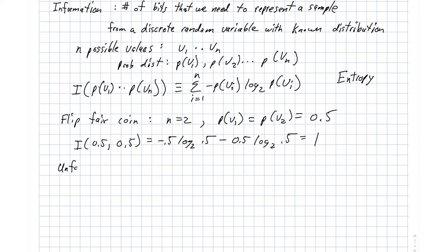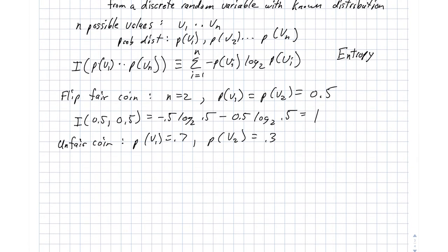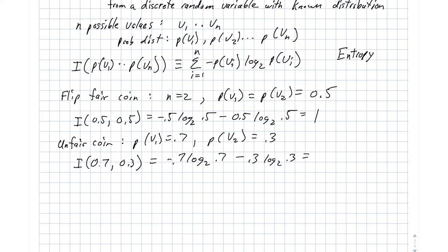Now let's assume an unfair coin where p(v₁) is 0.7 and p(v₂) is 0.3 — so I'm getting heads more than twice as often as tails. The information in this case is: minus 0.7 times log base 2 of 0.7, minus 0.3 times log base 2 of 0.3. If you work that out, it comes to about 0.88.